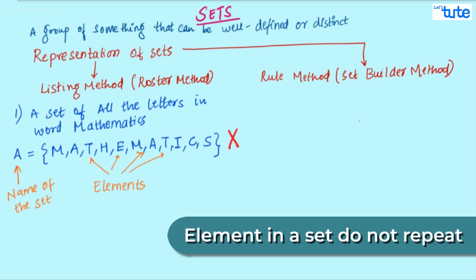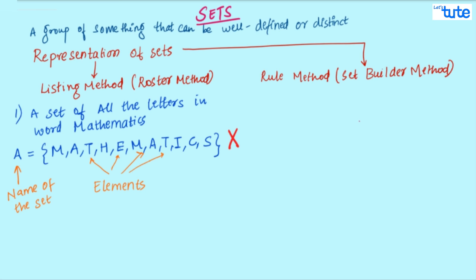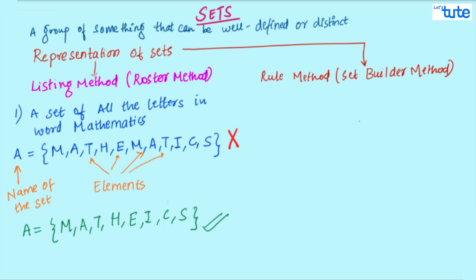The elements in this set are never repeated. Every element appears just once in a set. Hence, the solution of this set of all the letters in the word mathematics will be A is equal to curly brackets M A T H E I C S curly brackets closed.